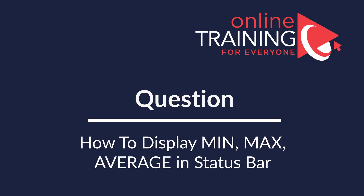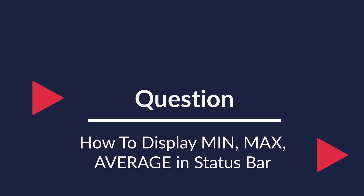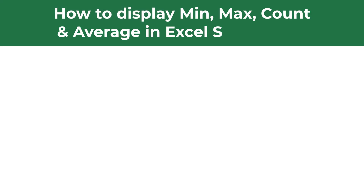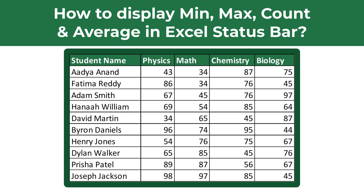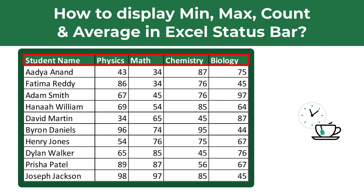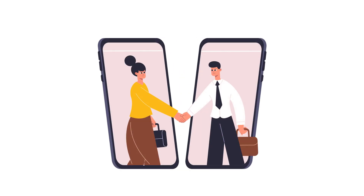You frequently get questions about usage of formulas in Excel, and sometimes questions on how to display data in the status bar. For example: how to display minimum, maximum, count, and average in the Excel status bar. You're presented with a data set of student grades showing student names and grades in physics, math, chemistry, and biology. Do you know how to add auto calculations in the status bar?